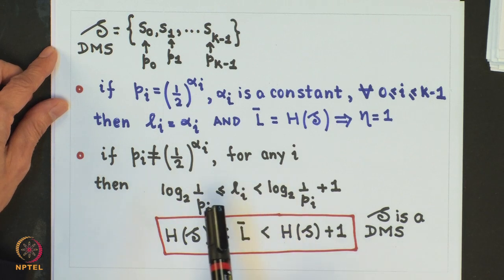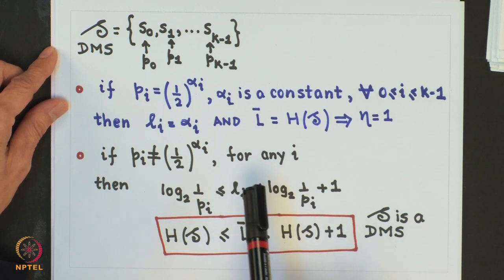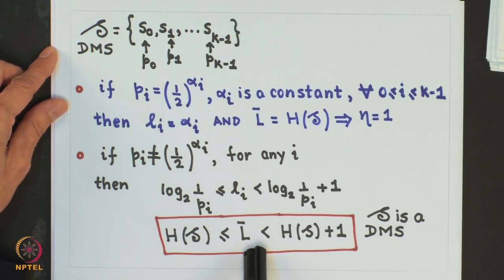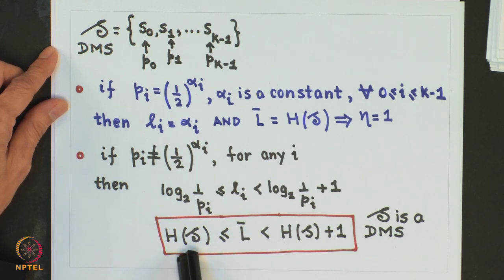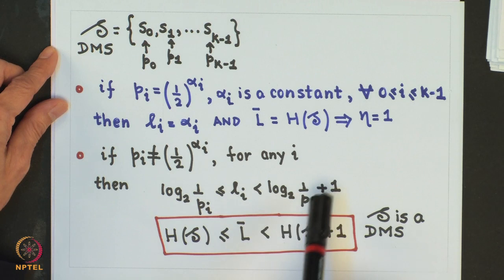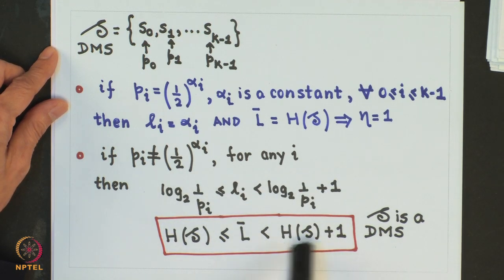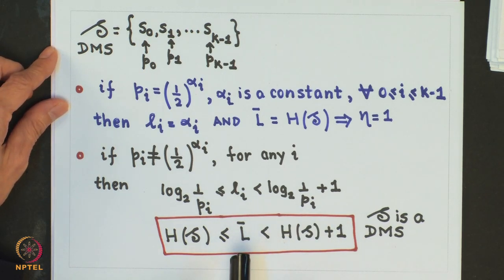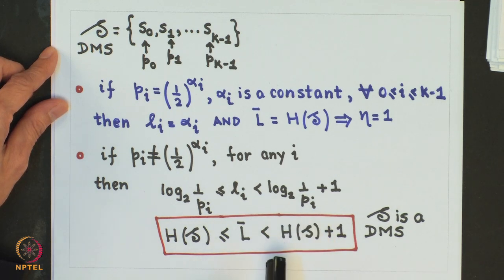So what this means is that I should be able to design a prefix code, and for that prefix code the average length of the code cannot be smaller than the entropy of the source. Using this strategy we can get the average length of the code within 1 bit of the entropy of a discrete memoryless source. However, this strategy may not be very good specifically when the entropy of a source is a low value, as we will see a little later.